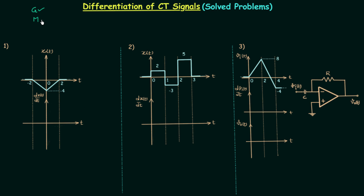On the other hand, if you choose to follow the mathematical method, you first need to obtain the mathematical representation of signal x itself from the given waveform — that is step one. After this you need to perform the differentiation, and then you again need to plot the waveform of the differentiated signal. So it is a three-step process and thus it is more time consuming compared to the graphical method.